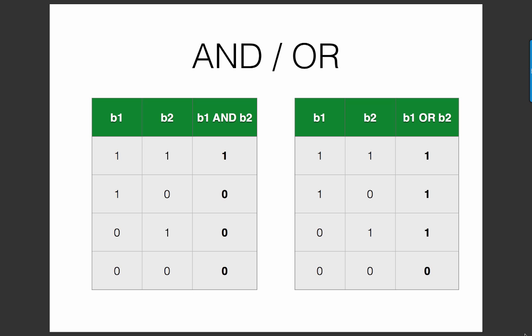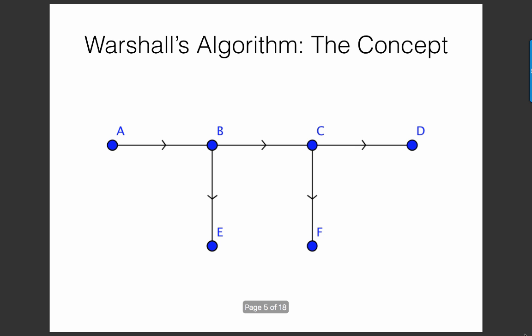That's actually all the math that Warshall's algorithm actually uses. Let's move on to discuss the basic gist behind what this algorithm is supposed to do. For that, take a look at this directed graph that has six nodes. How would we build the transitive closure of this relation?